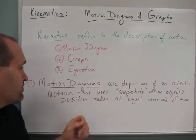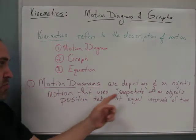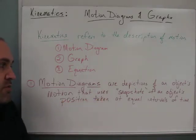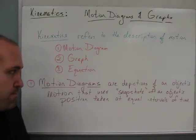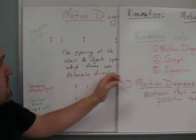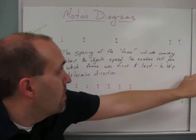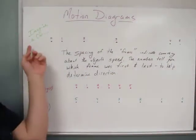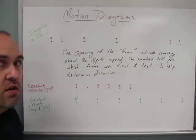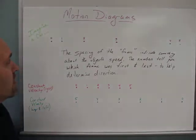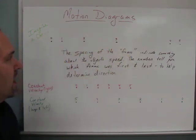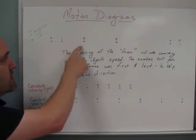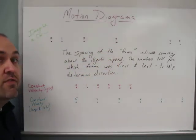Let's start with motion diagrams. Motion diagrams are depictions of an object's motion that use snapshots of an object's position taken at equal intervals of time. So imagine we have a car driving along a straight road, and at equal intervals of time we plot the car's position and how it changes over time. These are numbered zero, one, two, three, four, and five — sometimes called frames.